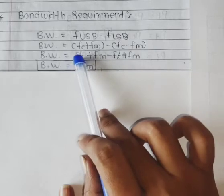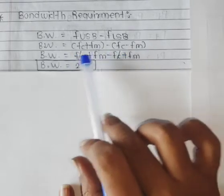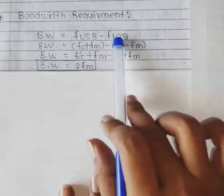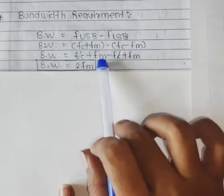The minus minus term becomes plus, and the minus term will cancel. f_c and f_c cancel, and what will be left is 2*f_m.